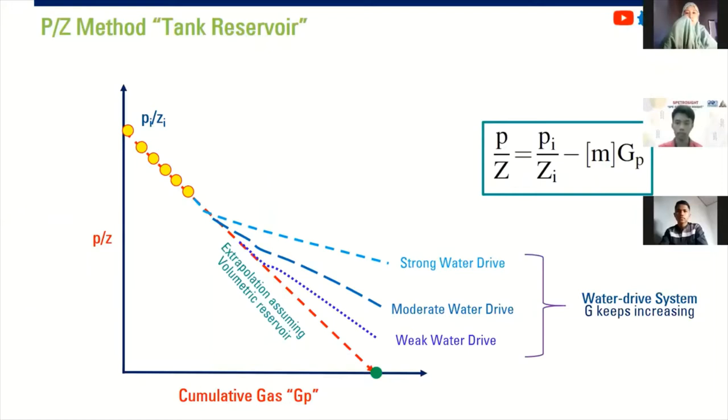So this is actually easy and interesting. You can construct P over Z analysis if you have sufficient data. So far, so good. And then we continue with gas well deliverability.